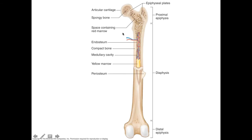Moving on to bone — in addition to the histology, we're also having you look at the gross anatomy of a long bone, in particular the femur. In lab we have a real femur that's been split in half, allowing you to see these structures. When we talk about long bones, we have two regions: the shaft or diaphysis, and then the ends or epiphyses — the distal epiphysis and the proximal epiphysis. These are general terms that describe the overall areas of a long bone.